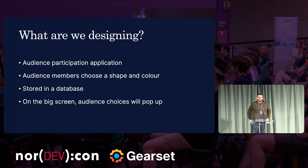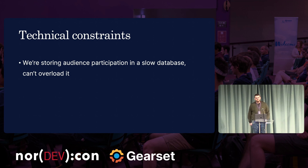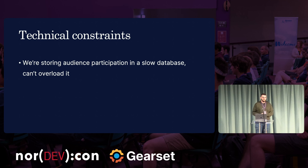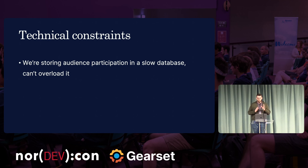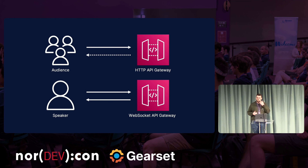I wanted to take this theory and look at how you can put it into an actual application. What I want to walk through is an audience participation application — and this is where my live demo gets nervous. The idea is that audience members can choose a shape and a colour on their phone, laptop, or tablet. This is stored in a database, and then on my laptop the choices that audience members have made will pop up on the screen in JSON form, because I've run out of time to make it pretty.